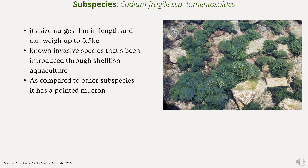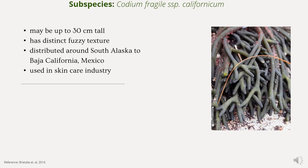The second subspecies is Codium fragile subspecies tomentosoides. Its size ranges up to 1 meter in length and can weigh up to 3.5 kilograms. It is a non-invasive species that has been introduced to shellfish aquaculture, and compared to other subspecies, it has a pointed mucro.